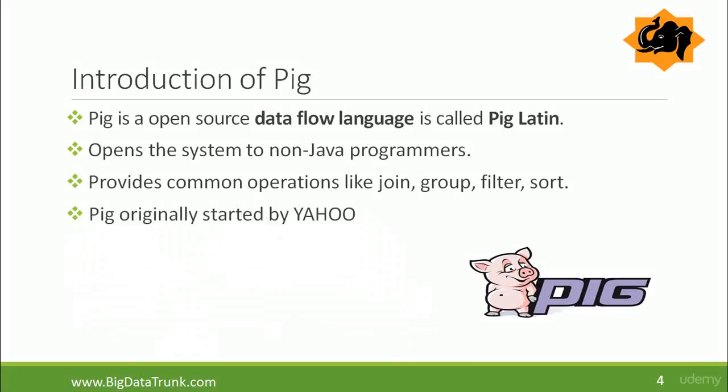Pig was originally started by Yahoo and it was born out of a desire that they needed some language that could easily solve the problems, because MapReduce programming was getting quite difficult. And many MapReduce users were also not comfortable with declarative languages such as SQL. You can visit pig.apache.org for detailed documentation and now it's an open source project under Apache.